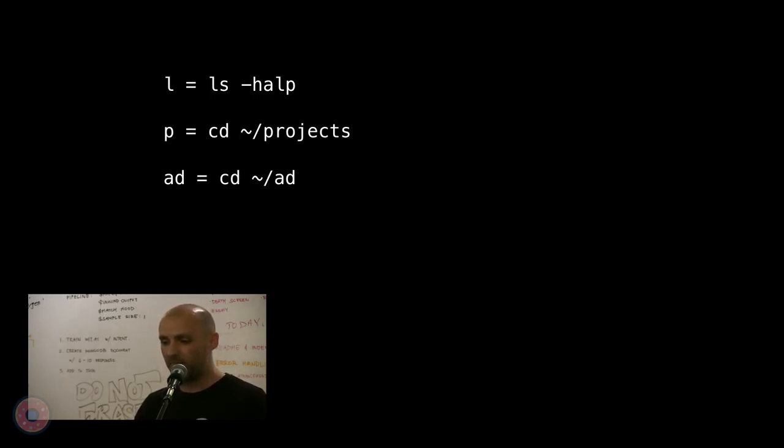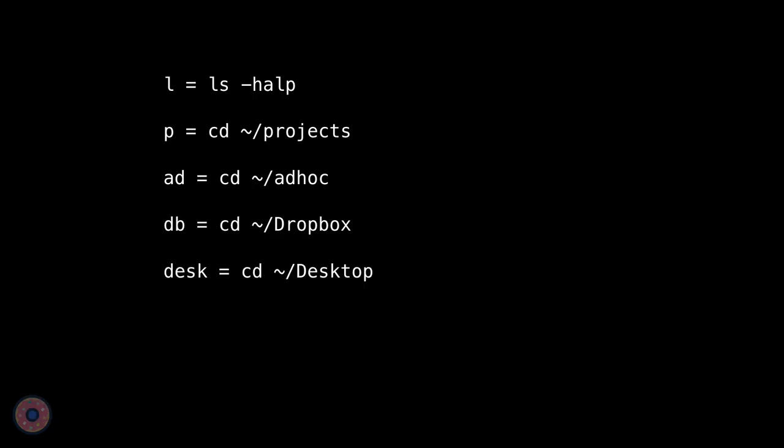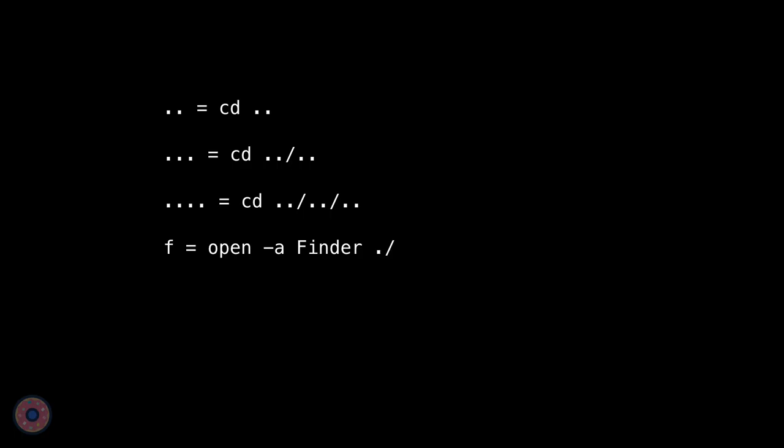Navigating and working with the file system is another good candidate for aliases. Make an alias for your favorite flavor of ls — mine is just l. Then make aliases for common directories you have to switch to all the time: your projects, work, Dropbox, desktop, downloads, whatever. You might know that cd dot-dot takes you up a directory, but I like to just type dot-dot. Add another dot to go up two directories, another for three. There's also a nice one that opens your current directory in Finder so you can continue working with a GUI. And cd dash will take you back to your last used directory — I just type dash. Same goes for git checkout dash, which switches you to your previous branch — so I do git dash, or just g dash.